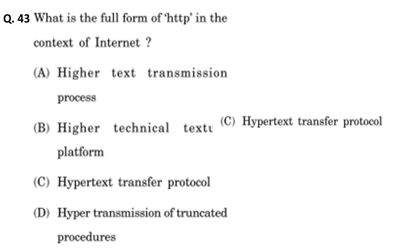The forty-third question: what is the full form of HTTP in the context of the internet? Please remember the full form of HTTP and WWW. WWW stands for World Wide Web. HTTP options are: higher text transmission process; higher technical texture platform; hyper text transfer protocol; hyper transmission of truncated procedure. The correct answer is hyper text transfer protocol. Please remember: WWW is World Wide Web and HTTP is Hyper Text Transfer Protocol.